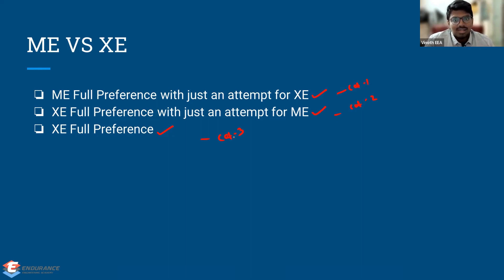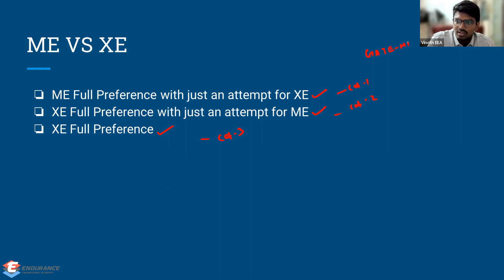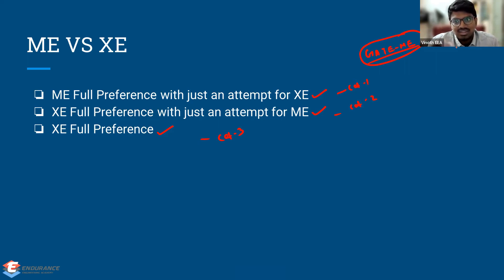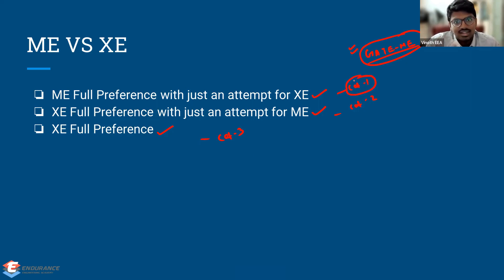Category one: ME full preference with just an attempt for XC. Who should do this? A student who planned for GATE ME properly from the beginning — maybe from February or March, or who took a break but restarted from April, May, or June — and is following that schedule properly. This student has invested a good amount of time, maybe six months, and is already on the right path with a clear-cut idea about GATE ME.